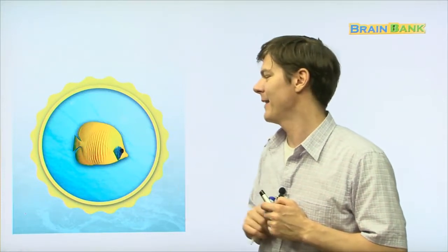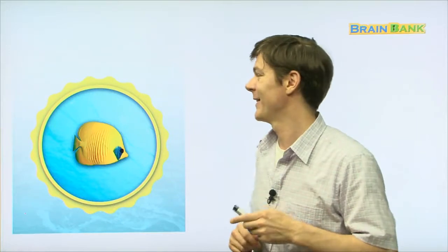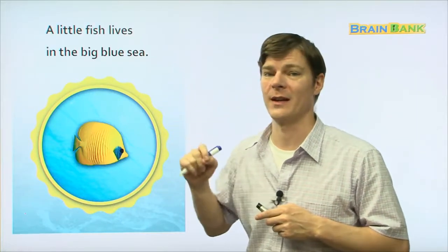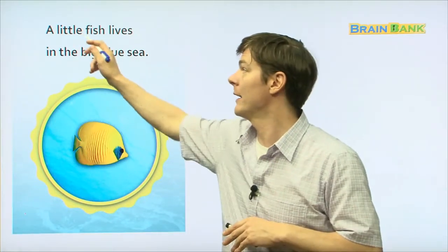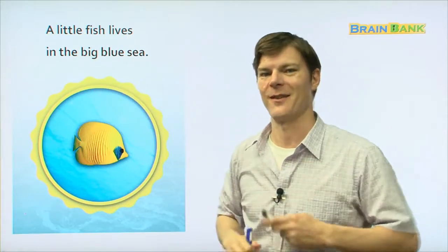Here is one fish, and what color is this fish? Yellow, that's right. And this fish is called a butterfly fish, like a nabi. Actually, I don't think that's how it translates into Korean. I think it's just butterfly fish. A little fish lives in the Big Blue Sea. Everyone, repeat after me. A little fish lives in the Big Blue Sea.